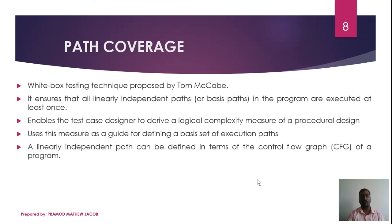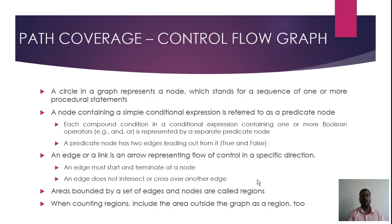For path coverage we use a control flow graph. The control flow graph has mainly three notations: a circle represents a node, a double circle represents a predicate node, and an edge represents a transition between nodes.